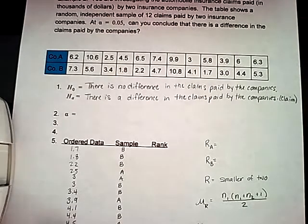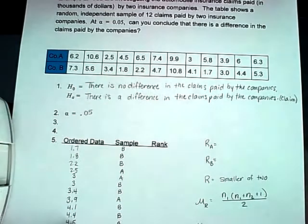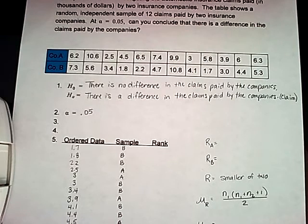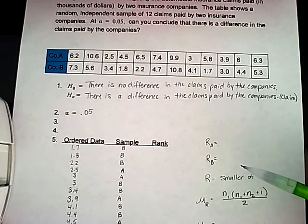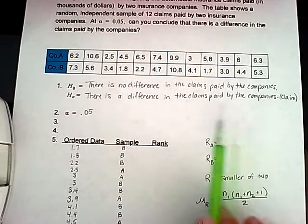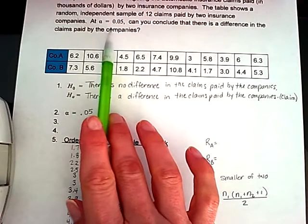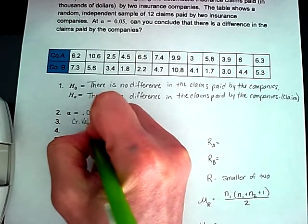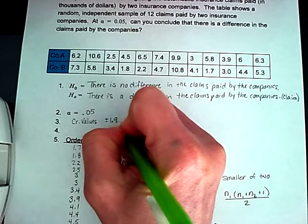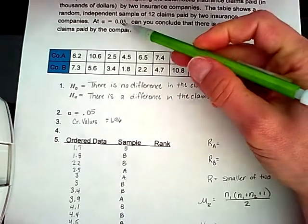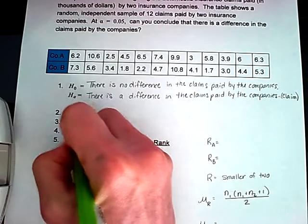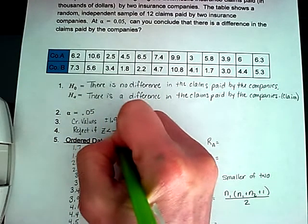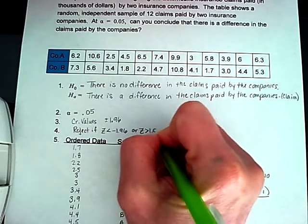For step two, we're going to use alpha equals 0.05, given in the problem. For step three, we're looking for our sample size. Because we're going to eventually use a z-score for a test statistic in this example, we're going to use the normal distribution chart. I'm looking for our rejection regions in a normal distribution for 0.05. Our critical values are going to be positive and negative 1.96. That's a two-tail test using 0.05 for our level of significance. We're going to reject if our z ends up being less than negative 1.96 or if our z is greater than 1.96.